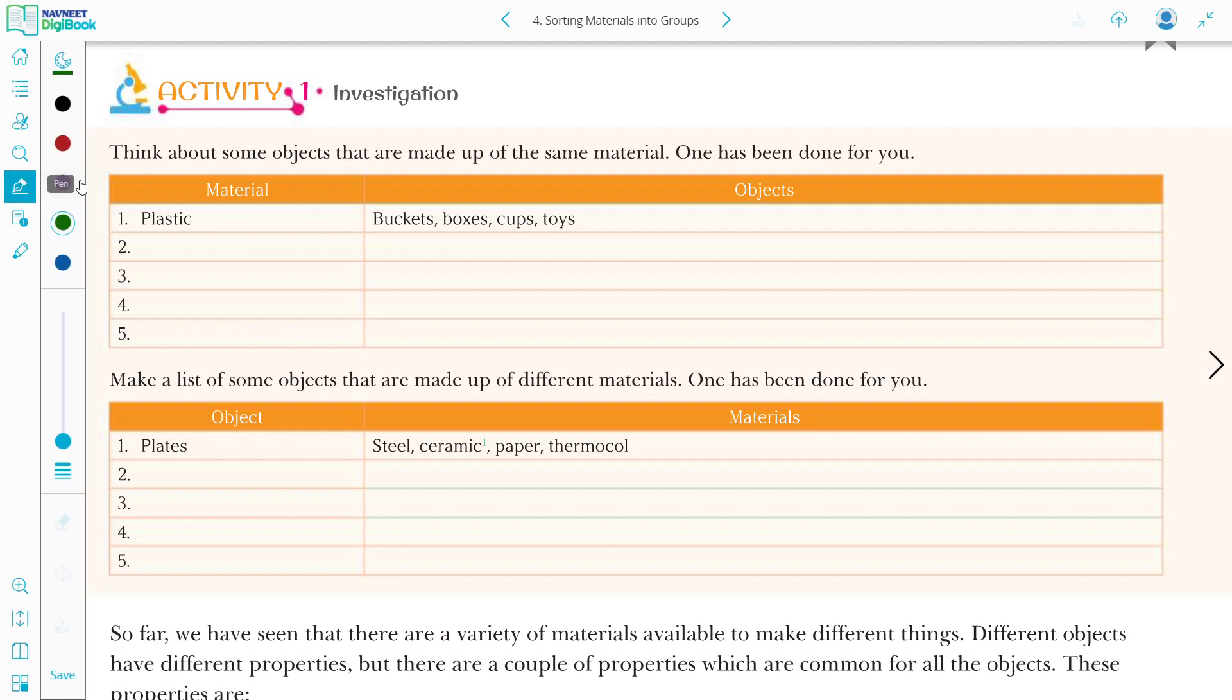Activity 1. It is a very simple activity. You can do it on your own. Investigation. Think about some objects that are made of the same material. One has been done for you. What is the material that you have written which will be made of many objects? One is plastic. Plastic. What is the object? Pocket, box, cups, toys. The other object is wood. Let me consider it as wood. Wood is made of wood. If you look at your house, what will be there? Almira, table, chair, door, window. These are made of wood. Now you have three other materials and objects, right? You can write steel, iron, whatever you want.